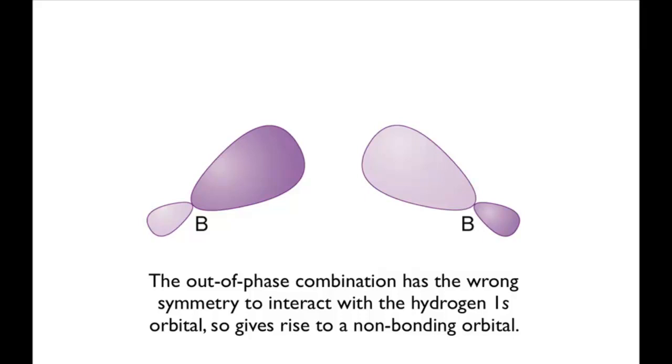So overall, the three orbitals combine to give a bonding orbital, a non-bonding orbital, and an anti-bonding orbital.